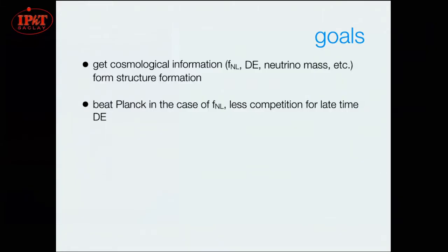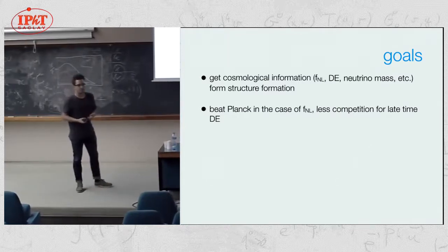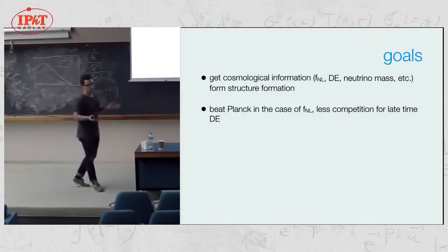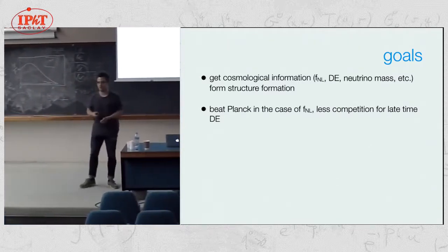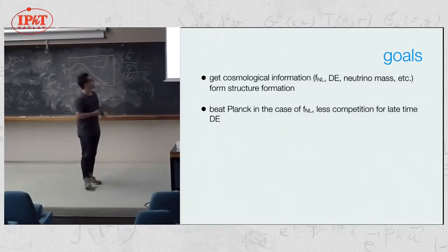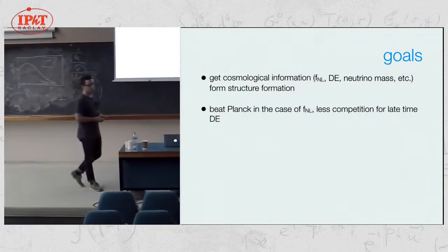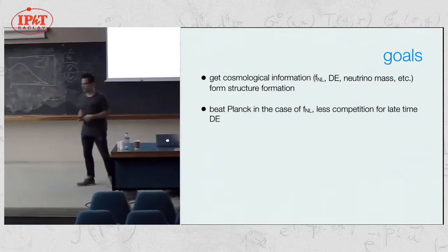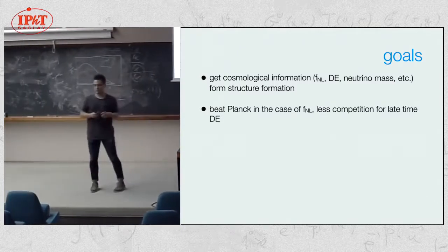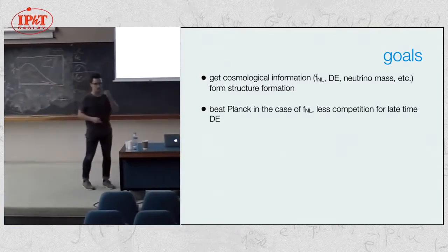In the case of FNL, there's already very tight constraints from Planck. So in order to use large scale structure, the predictions have to be very good, like less than a percent to beat the Planck constraints. Luckily for dark energy at late time, there are much less constraints. So we have the opportunity now to place very tight constraints on dark energy parameters.